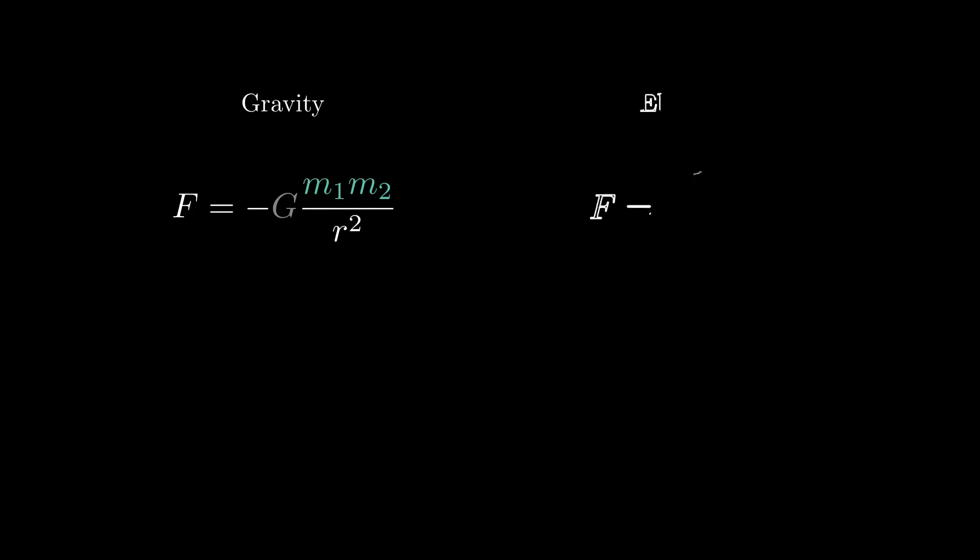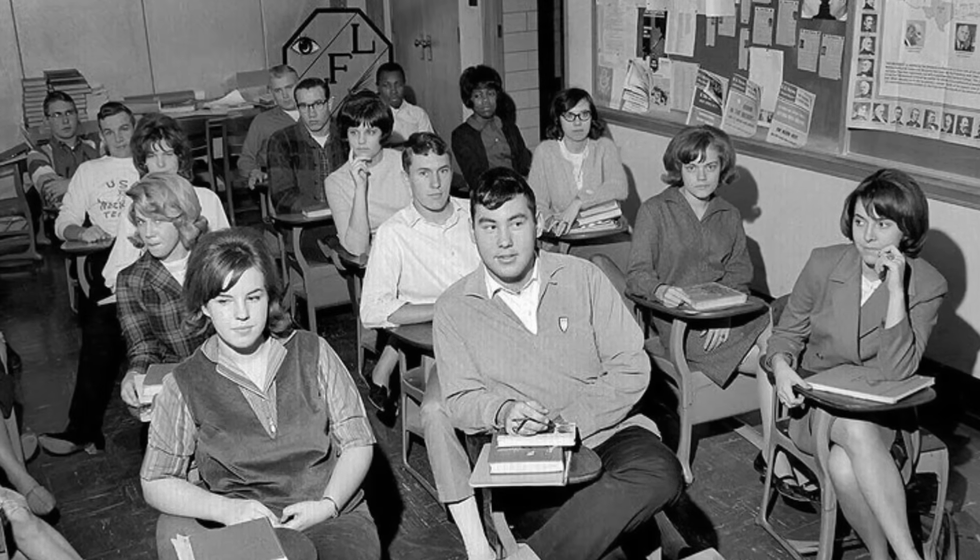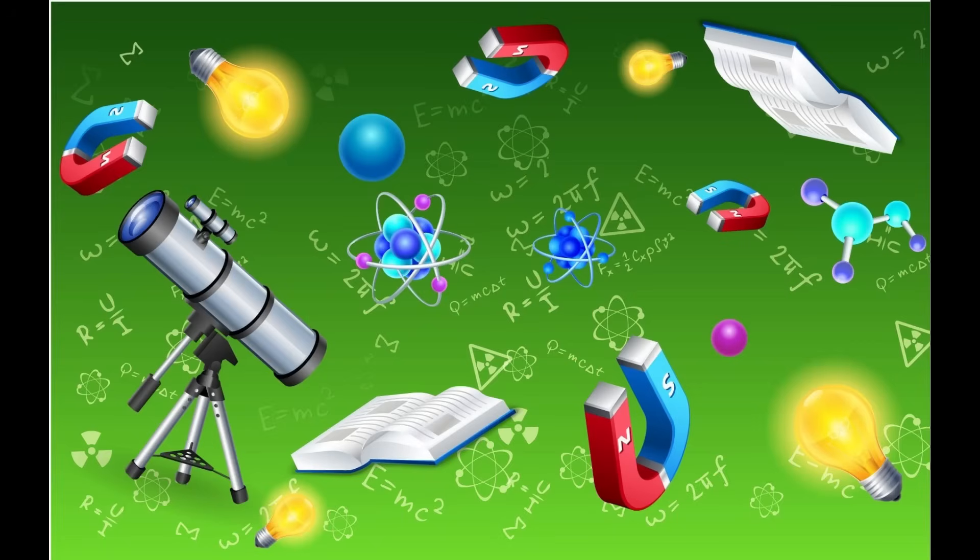This is a video about gravity, electricity, and complex numbers. Those are things we usually learn in high school, but not all together. They seem to be three unrelated branches of math and physics, but aren't they?